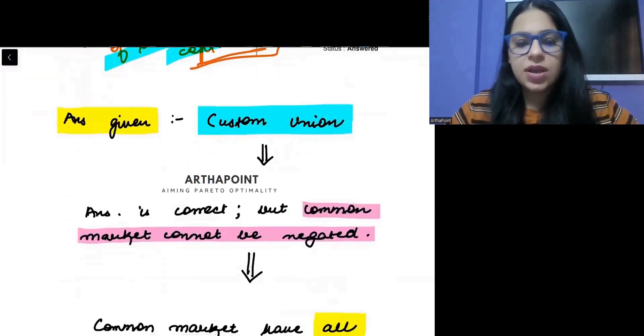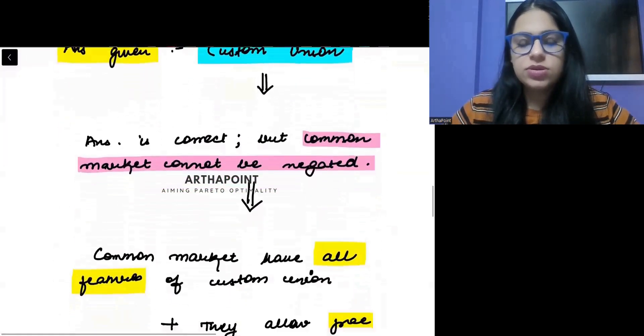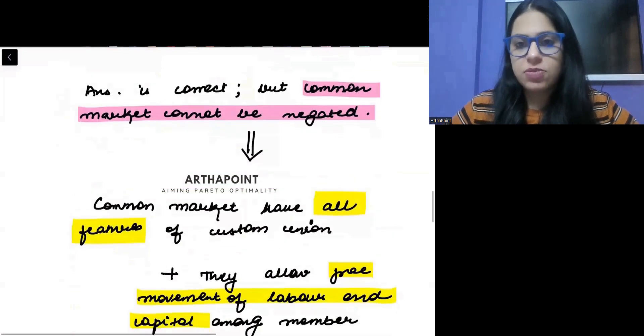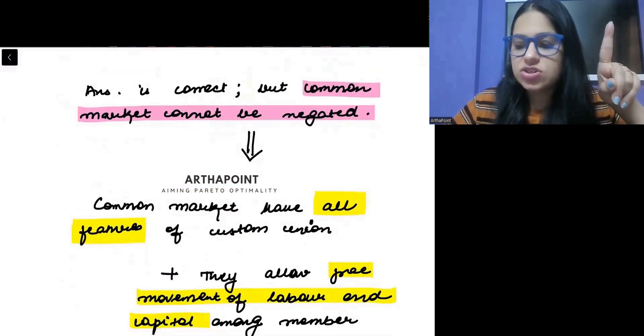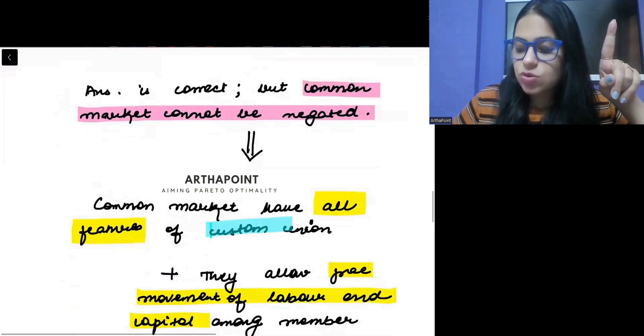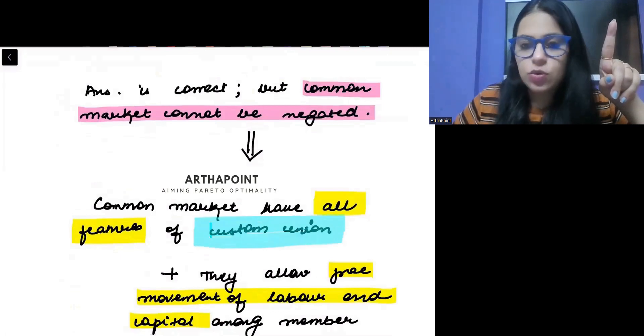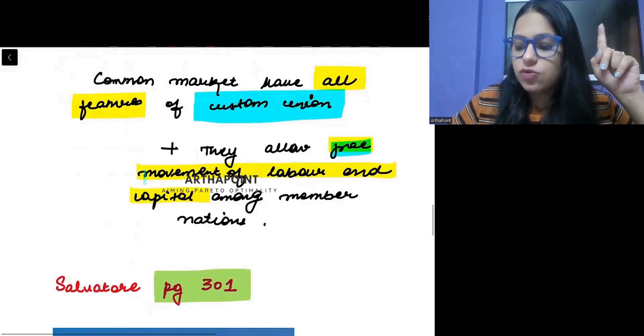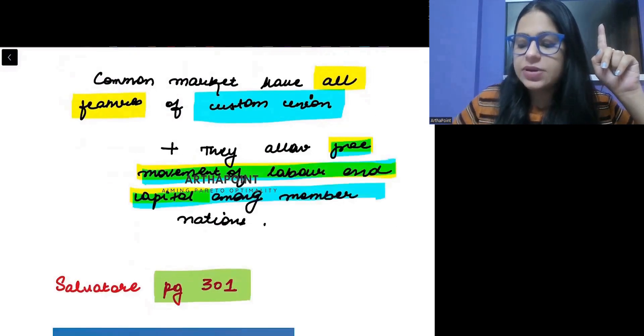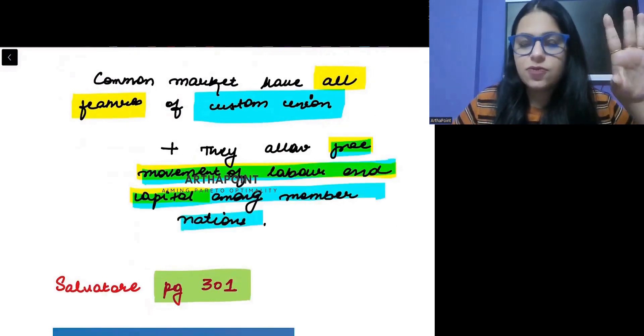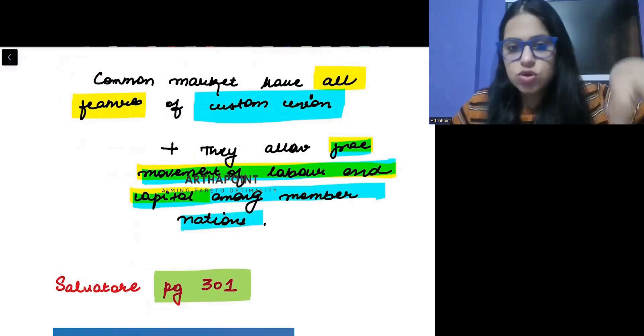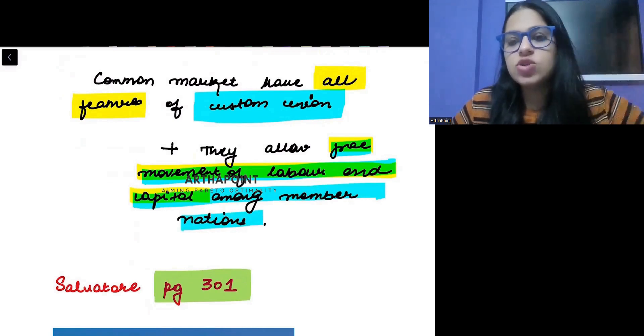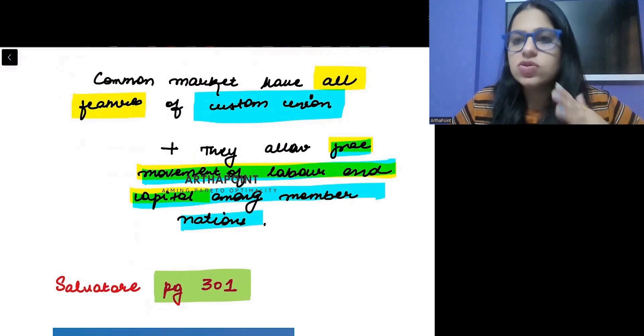So if I just talk about the features of common market, it has all the features of custom union. Custom union ke sare features common market mein hotte hi hotte hain. Plus they also allow for free movement of labor and capital among the nations. Wo apne jo bhi us common market ke anddar hoonge, unke beech mein free movement of labor and capital also they allow that.